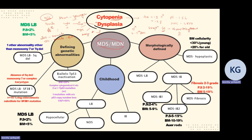MDS is classified into three types: one with defining genetic abnormality, one morphologically defined, and one childhood MDS. The genetically defined MDS has three subtypes: 5Q deletion, SF3B1 mutation, and biallelic P53 inactivation. For 5Q deletion, there should not be monosomy 7 or 7Q deletion, because monosomy 7 is commonly seen in acute leukemias where there are more blasts and risk of progression to AML. Any other cytogenetic abnormalities along with 5Q deletion are acceptable.